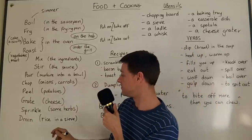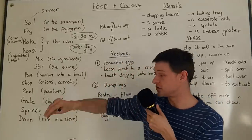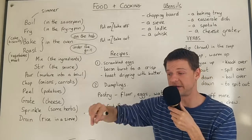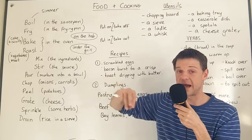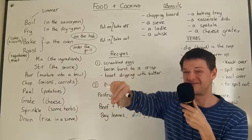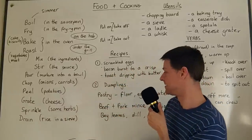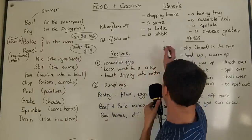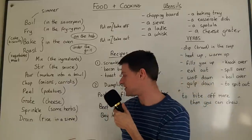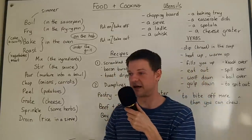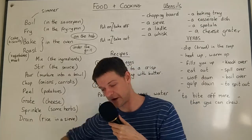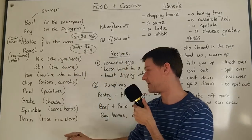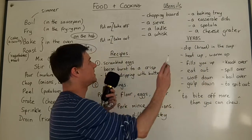You might then sprinkle the cheese on your pizza, or sprinkle some herbs on top — perhaps parsley or dill. Sprinkle is when you add something in small amounts on top. Lastly, you can drain your rice in a sieve. A sieve is what you put the rice in so the water drains away. That's how you get rid of the water after boiling the rice.